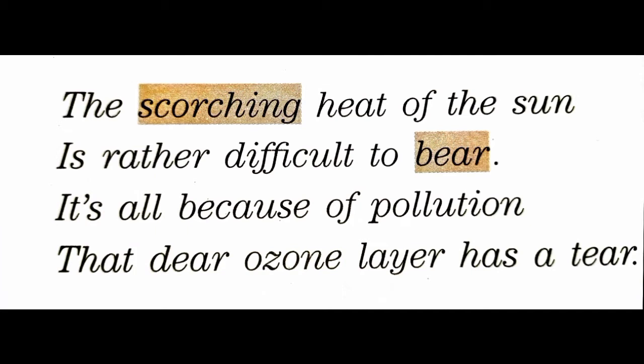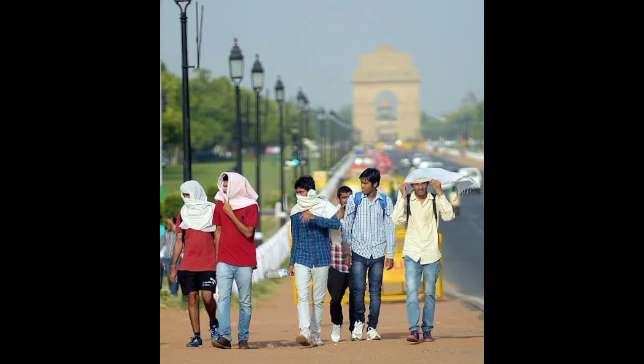The scorching heat of the sun is rather difficult to bear. It's all because of pollution that dear ozone layer has a tear. Here the poet is saying that all the changes we are seeing in our environment are because of pollution. Scorching heat means burning heat — the increase of temperature we are seeing nowadays, it is increasing day by day.